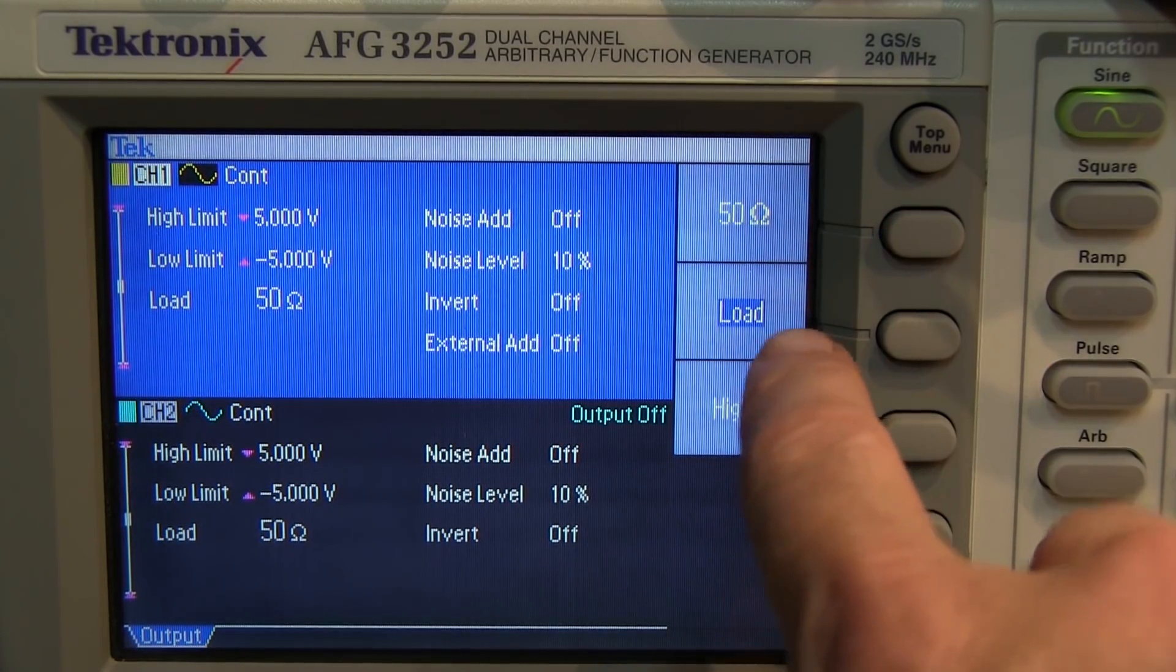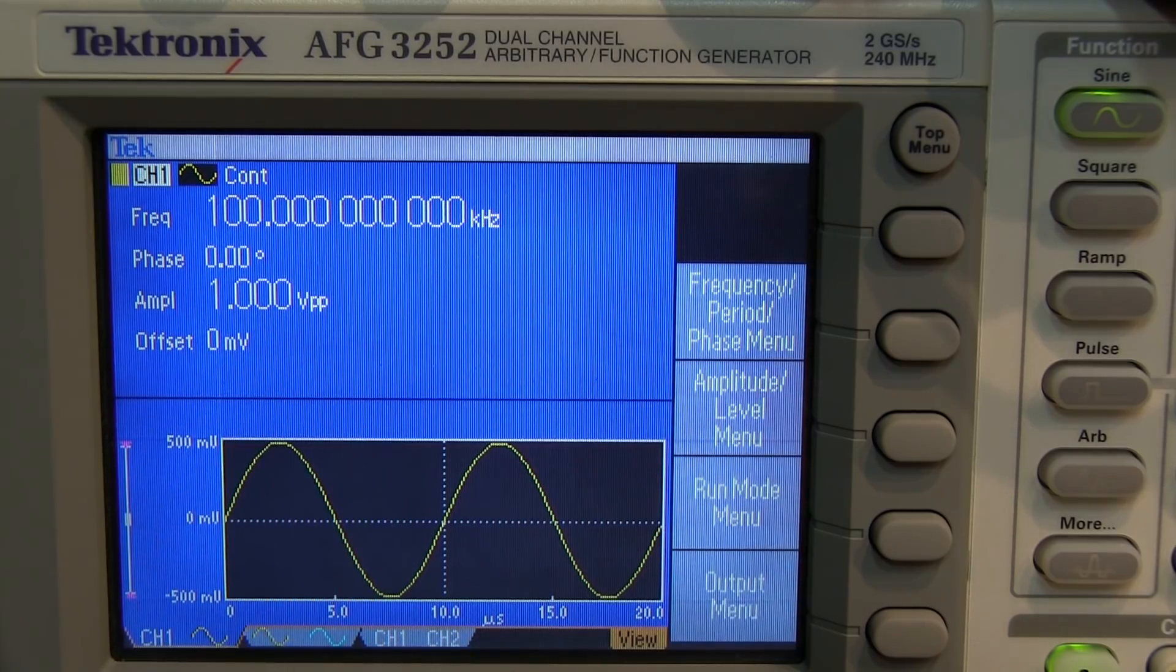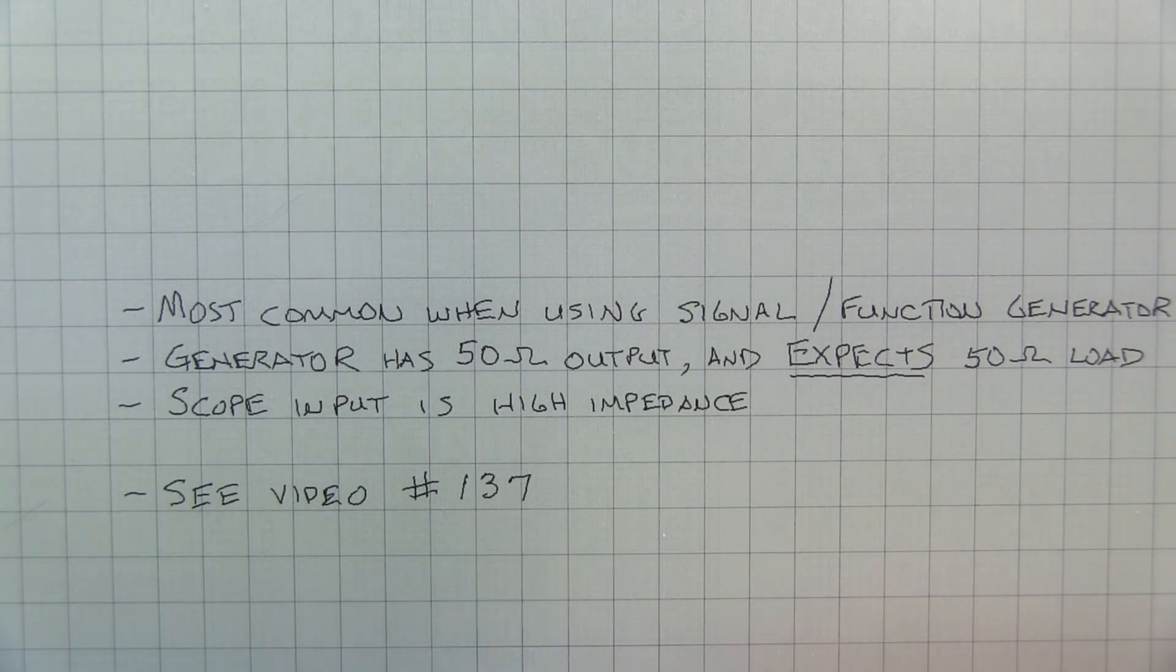high impedance, or something else. By doing that, the generator will then show you the actual voltage that will appear at your load. Again, you can check out video number 137 to get more detail on this.